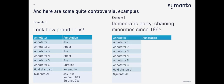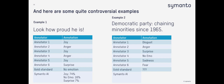The second controversial example: 'Democratic Party chaining minorities since 1965.' That's a tricky one. The annotators had no agreement — one said disgust, one said surprise, one said no emotion, one said sadness, one said fear. There can't even be a proper gold standard for this. Our AI predicted sadness at 57%, surprise at 24%, joy at 10%. This one was really, really tricky.